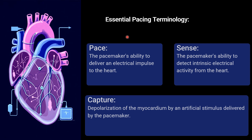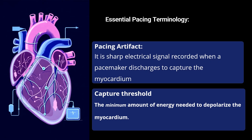Now we cover essential pacing terminology. Pacing means the pacemaker's ability to deliver an electrical impulse to the heart. Sensing is the ability of the pacemaker to detect the intrinsic electrical activity from the heart. Capture means depolarization of the myocardium by an artificial stimulus delivered by the pacemaker. Pacing artifact is a sharp electrical signal recorded when the pacemaker fires to capture the myocardium. Capture threshold is the minimum amount of energy needed to depolarize the myocardium. Capture threshold should be checked daily, as the transvenous pacing wire may migrate or require higher energy over time as fibrous tissue forms around the lead.